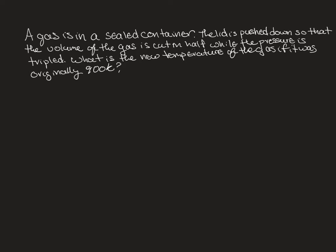In this video, we're going to do the problem: a gas is in a sealed container. The lid is pushed down so that the volume of the gas is cut in half while the pressure is tripled. What is the new temperature of the gas if it was originally 900 Kelvin?